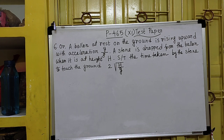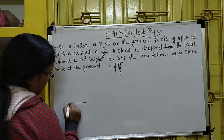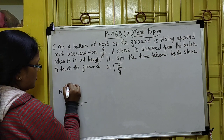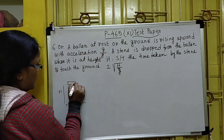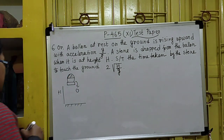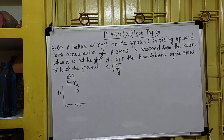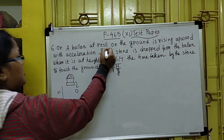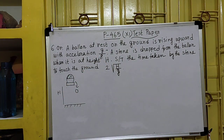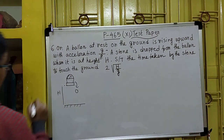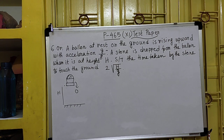Let's see the problem. Here is my ground level. Suppose this is height H. This is the balloon from where we have dropped the stone towards the ground. The balloon is moving with an acceleration g/h. Let's find the velocity attained by the balloon when it reaches height H.